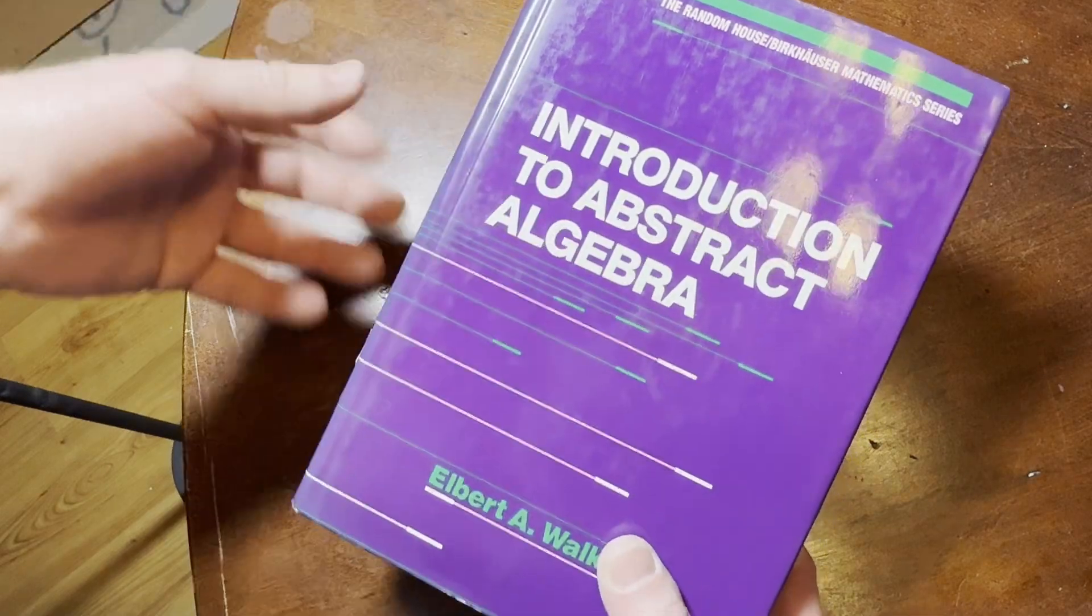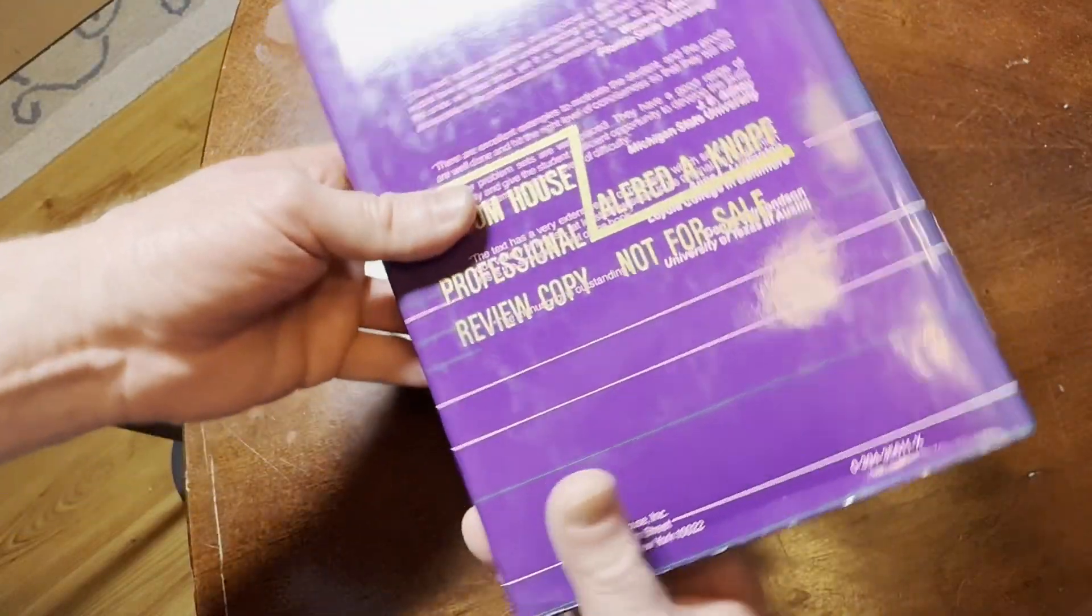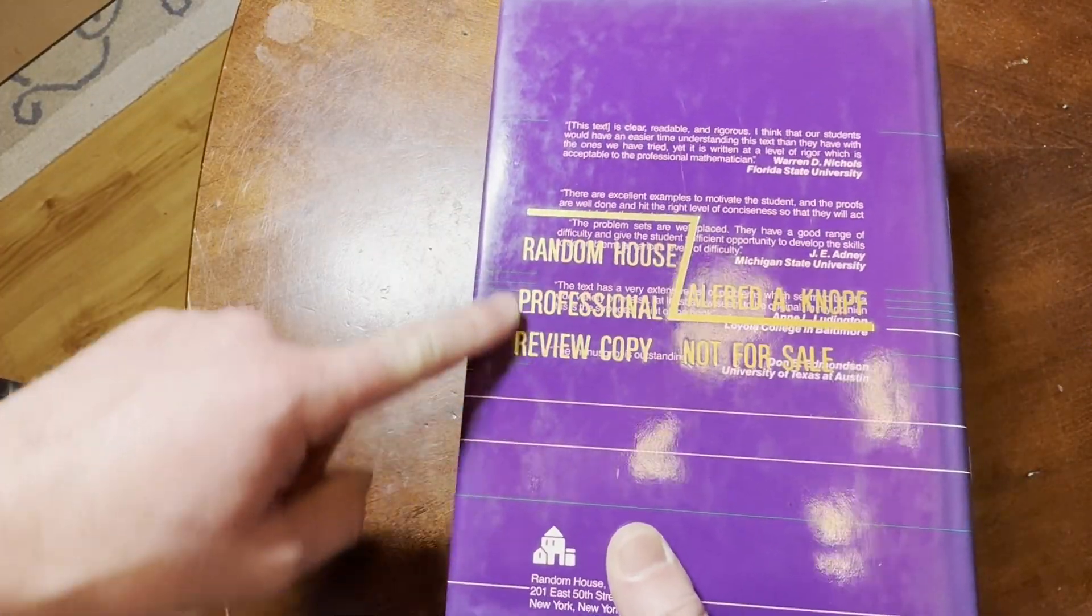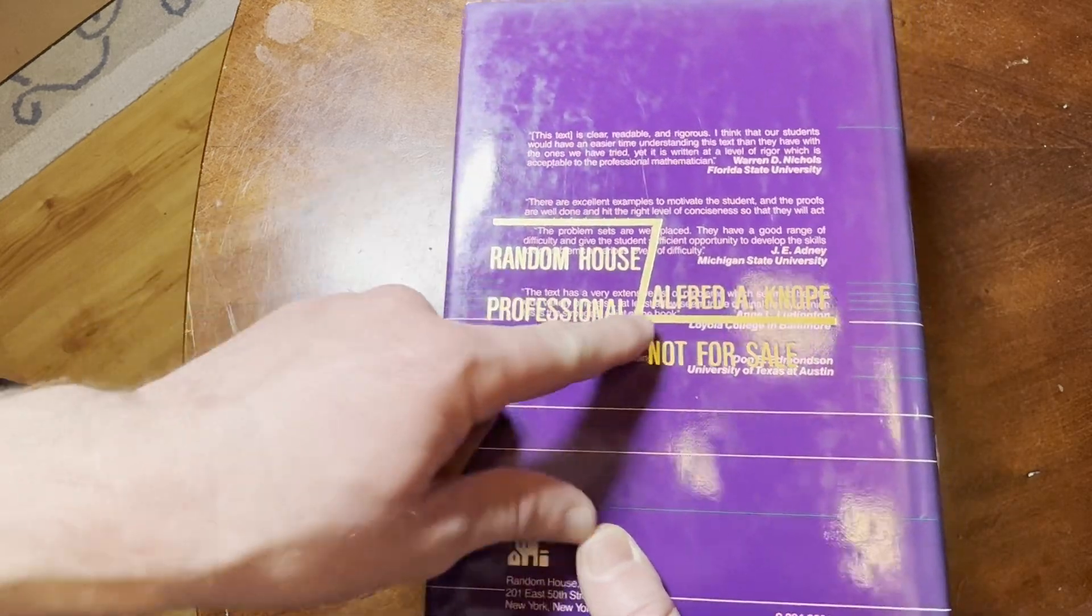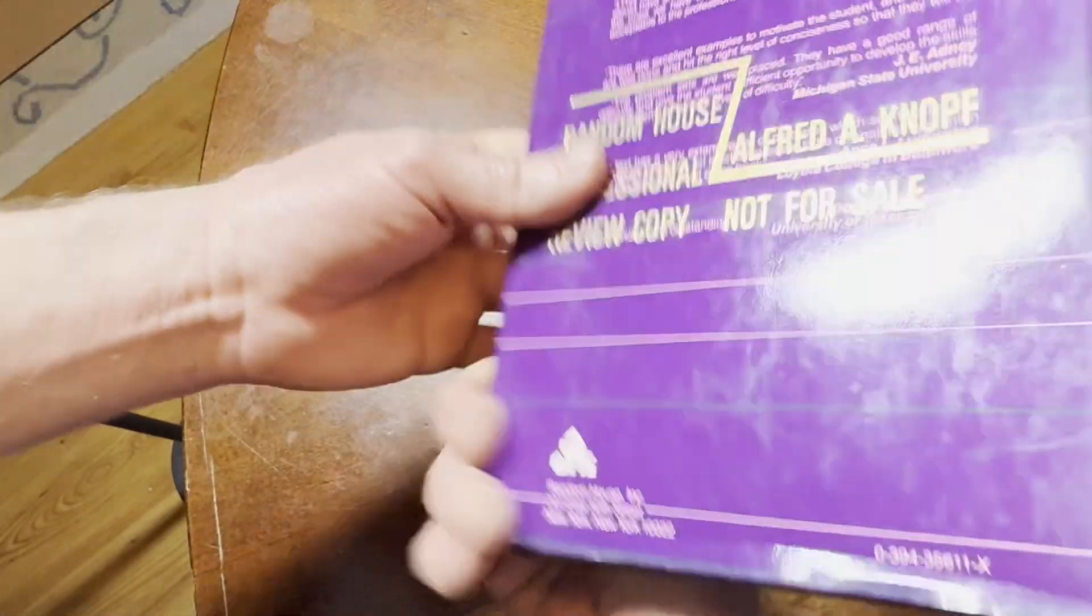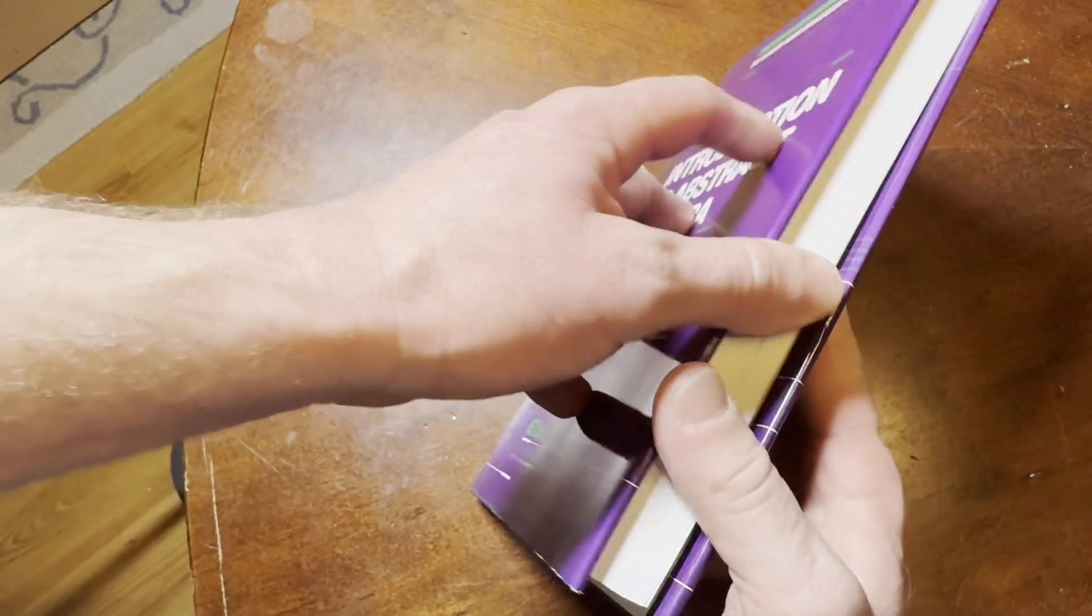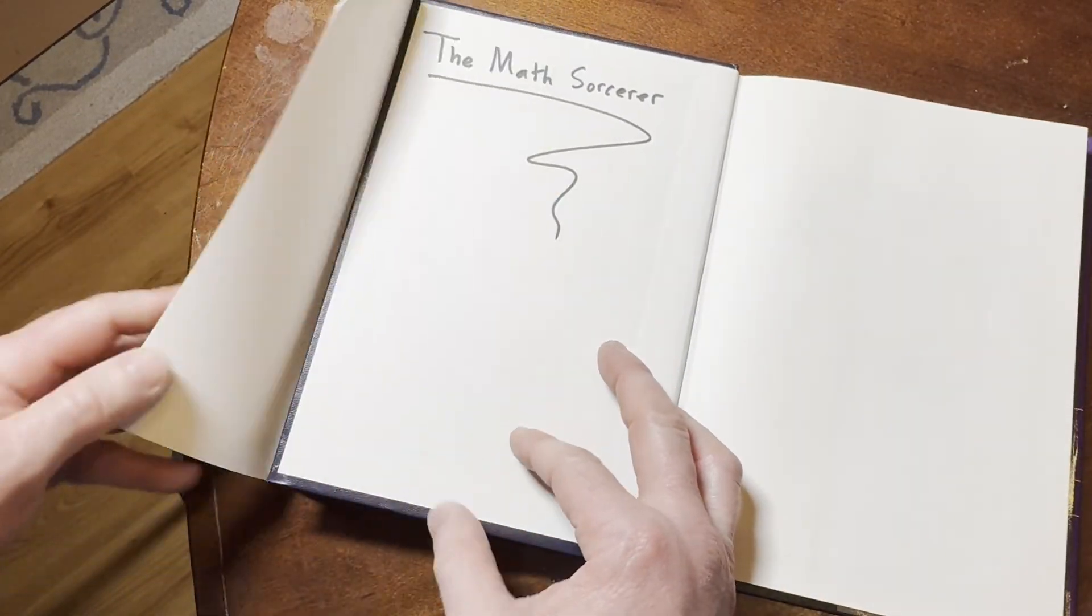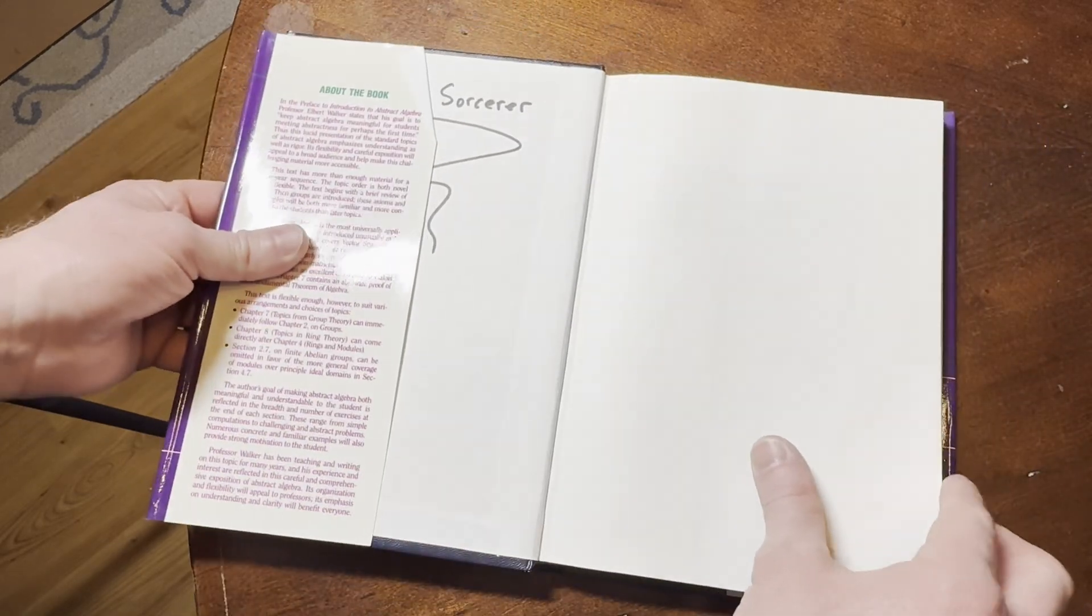Now, you might be able to find copies of this book, but this particular copy is a professional copy. It says Random House Professional Copy, Alfred A., Not For Sale. So this is a book that was given as a copy for evaluation.